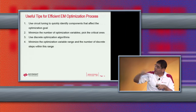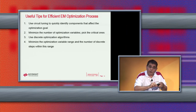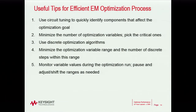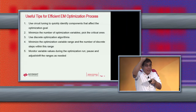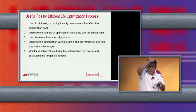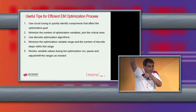Minimize the optimization range as well — go from 3 to 4 pF by steps of 0.2 instead of 0.1, so the number of EM optimization steps is less and it runs faster. While optimization is running, monitor the values. If a capacitor is going up toward 4 pF, pause the optimization and shift your range — for example from 3.5 to 4.5 pF or 4 to 5 pF — adjusting according to how your components are trending.